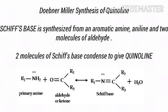Doebner-Miller synthesis of quinoline involves condensation of two Schiff bases. The Schiff bases are formed from aromatic amines, aniline and two molecules of aldehyde, as shown in the figure.